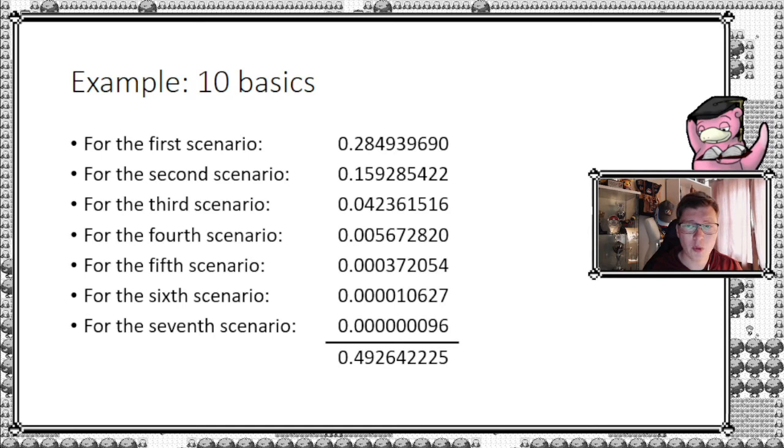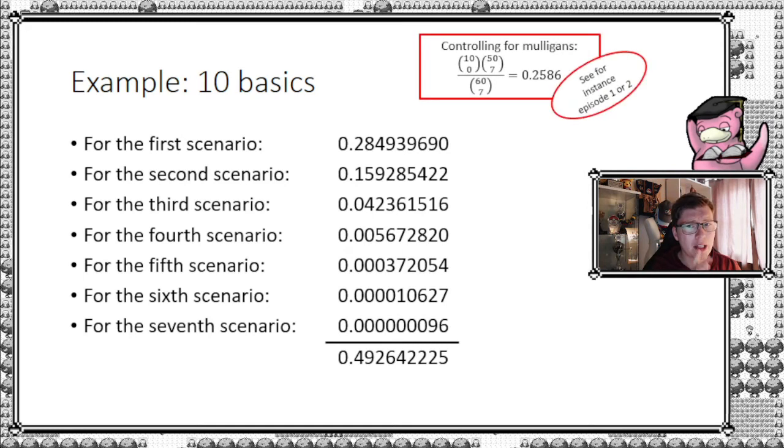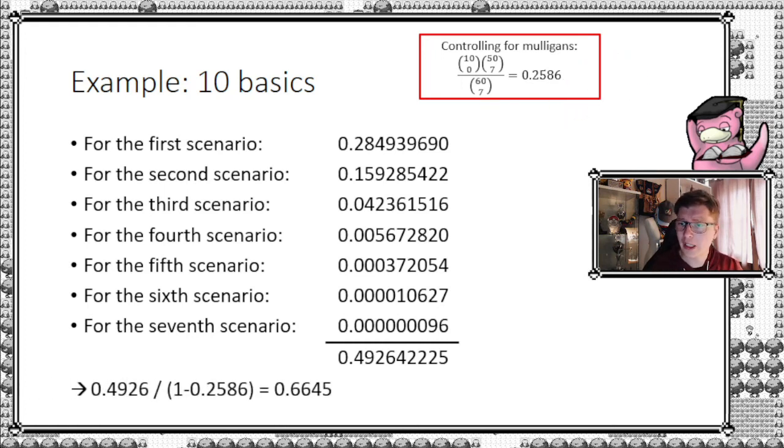We sum it all up and it gives roughly 49.26%. But wait, this is not corrected for Mulligans, so let's go ahead and do that. You see it up here, and if you want a more detailed explanation, again go back and see episode one or two. But correcting for this means we are dividing with one minus the probability of having a Mulligan, then we land at roughly two thirds, 66.45% to be precise.